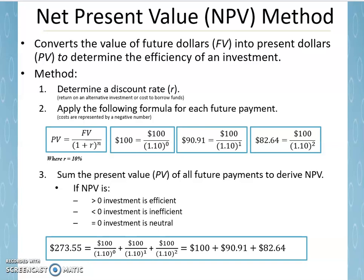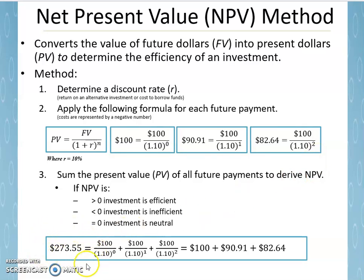Now let's look at how we can actually create the net present value from a stream of future payments. To do this, we just sum the present value of all future payments. For example, we would take the 100 from this immediate $100 payment, the 90-91 from this $100 payment a year from now, and the 82-64 from this $100 payment two years from now. If you do that, you should get about 273.55. So the net present value of this particular future stream of payments is 273.55.